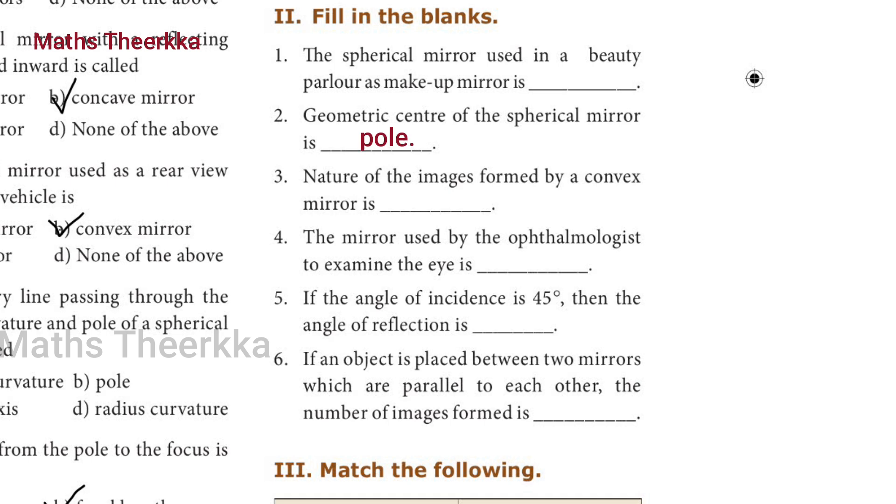Third question: nature of the image formed by a convex mirror is? Answer: virtual, erect, and diminished.